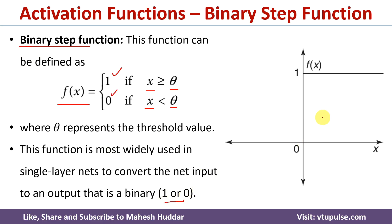This is how we can show the binary step function. If the value of x is less than the threshold value, f(x) is equal to 0. If the value of x is greater than or equal to some threshold value, f(x) is equal to 1. There are only two possibilities in this case.